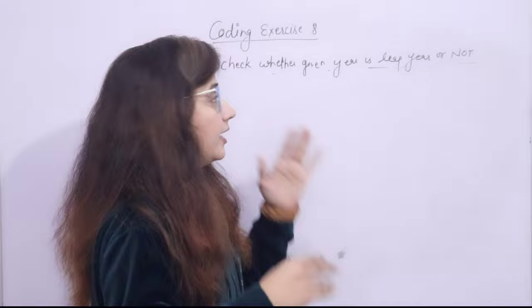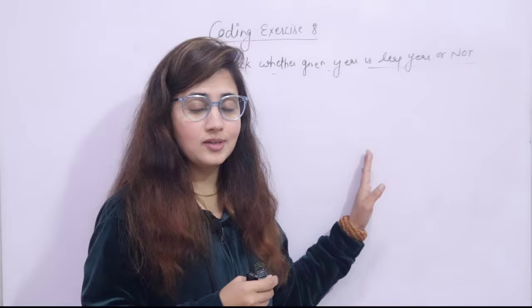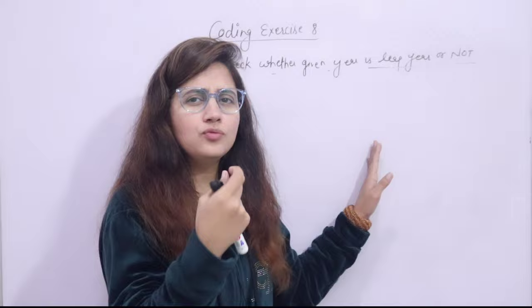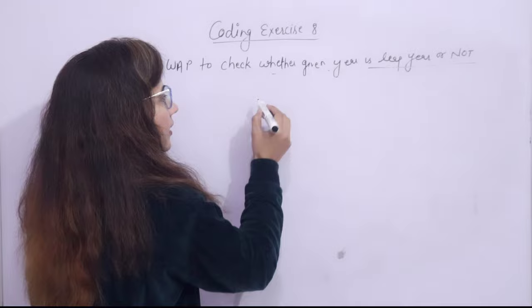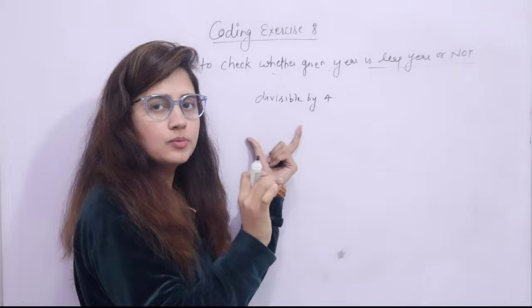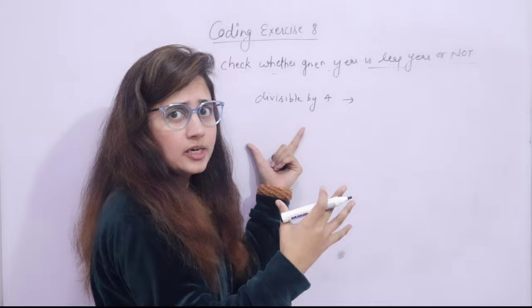If you already know the logic, pause the video and try to write the program. If you don't know, let me brief you. There are three to four steps. First, check if the number is evenly divisible by 4. If it is not divisible by 4, then definitely it is not a leap year.